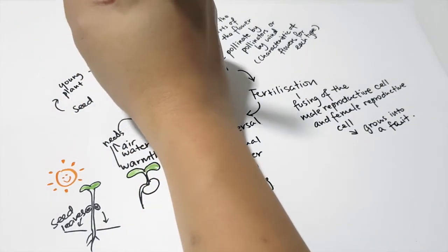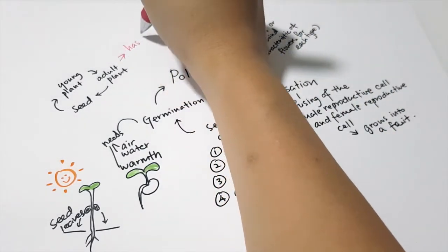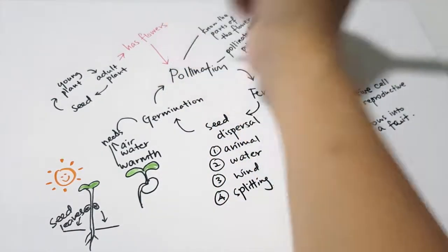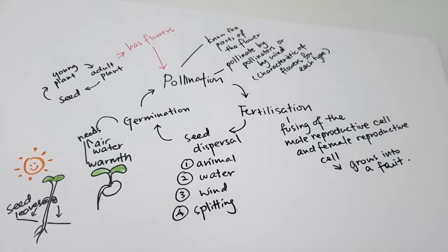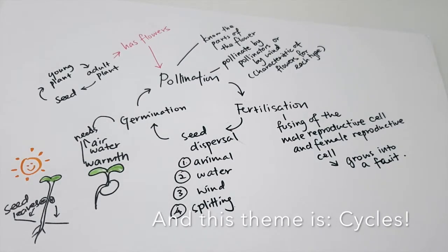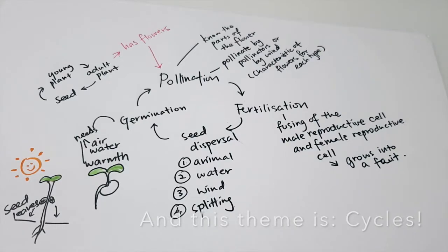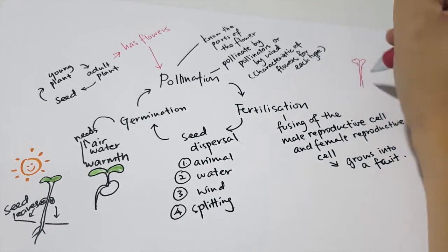After germination, the seed grows into a young plant, and the young plant grows into an adult plant — that's the plant life cycle. The adult plant will bear flowers, and those flowers continue the cycle of reproduction in flowering plants, which is why it's drawn as a cycle.